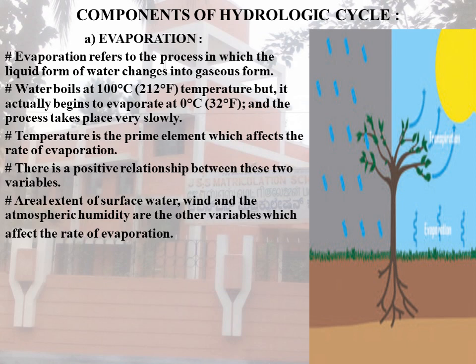When the air is calm, evaporated water tends to stay close to the water body. During windy conditions, water vapor is driven away and is replaced by dry air, which facilitates additional evaporation. The rate of evaporation increases with increasing wind speed, increasing temperature, decreasing humidity, and increasing aerial extent of the surface water body.